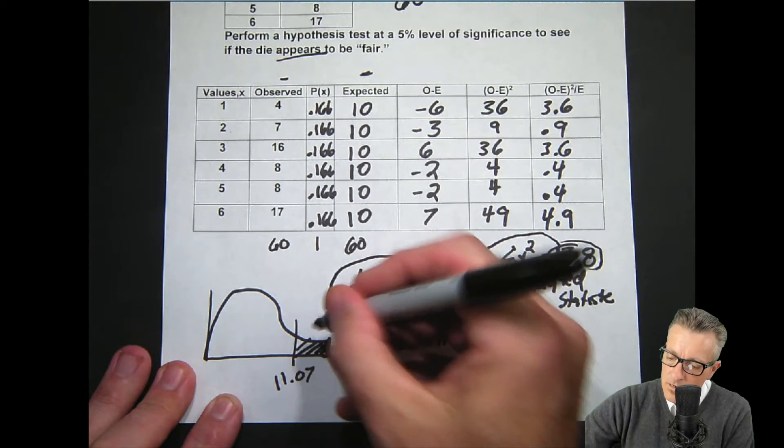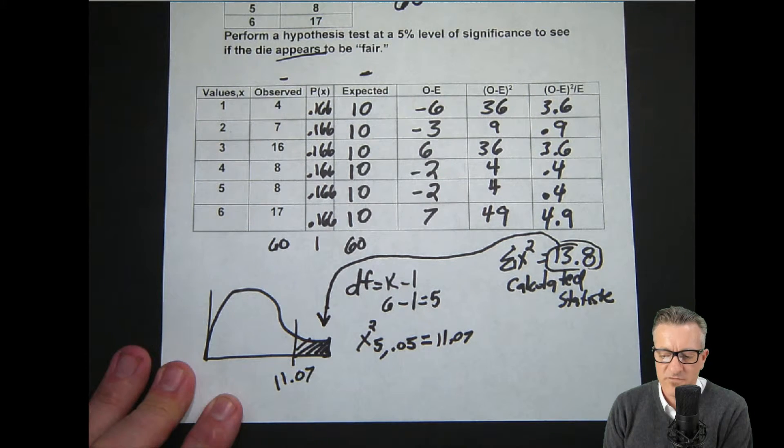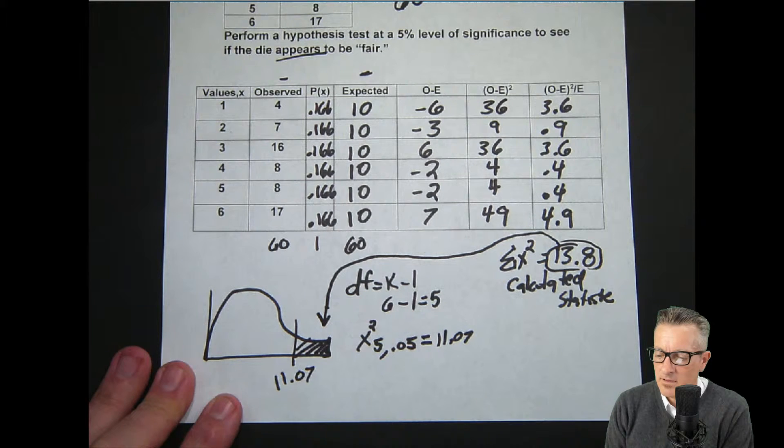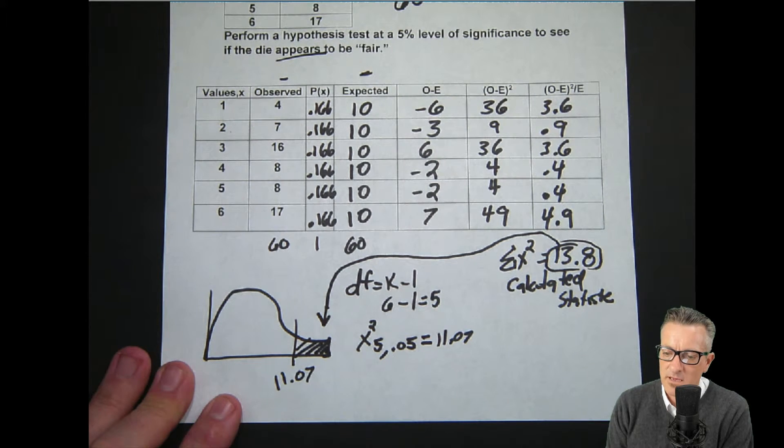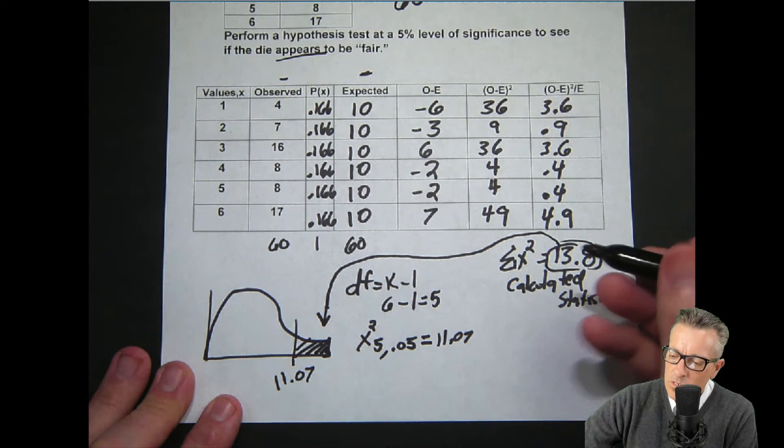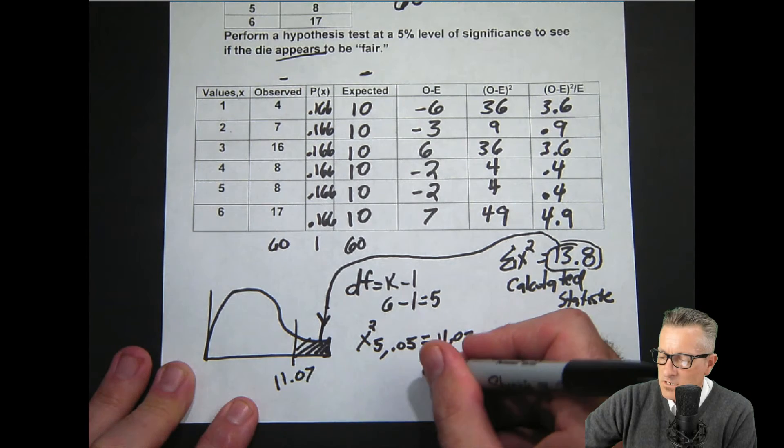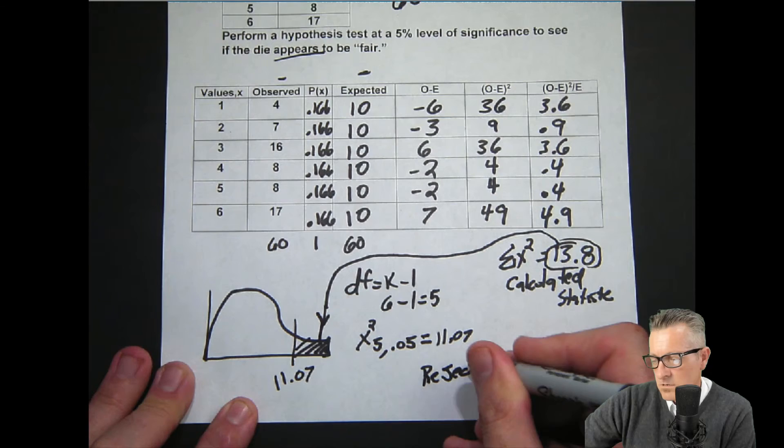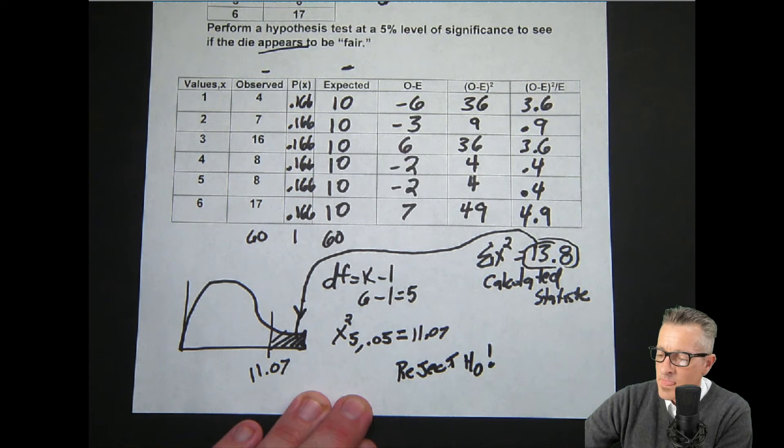In this case, it's in the rejection zone meaning it's far away from the norm, far away from the null. It's far enough that we are willing to accept that we could be wrong because it's within our constraints. We accepted that we could be wrong at a five percent level and this is actually much lower than that. We are going to reject because we're inside of the rejection zone. So, we are going to reject H0 which means it appears the dice or the die in this case is not fair.